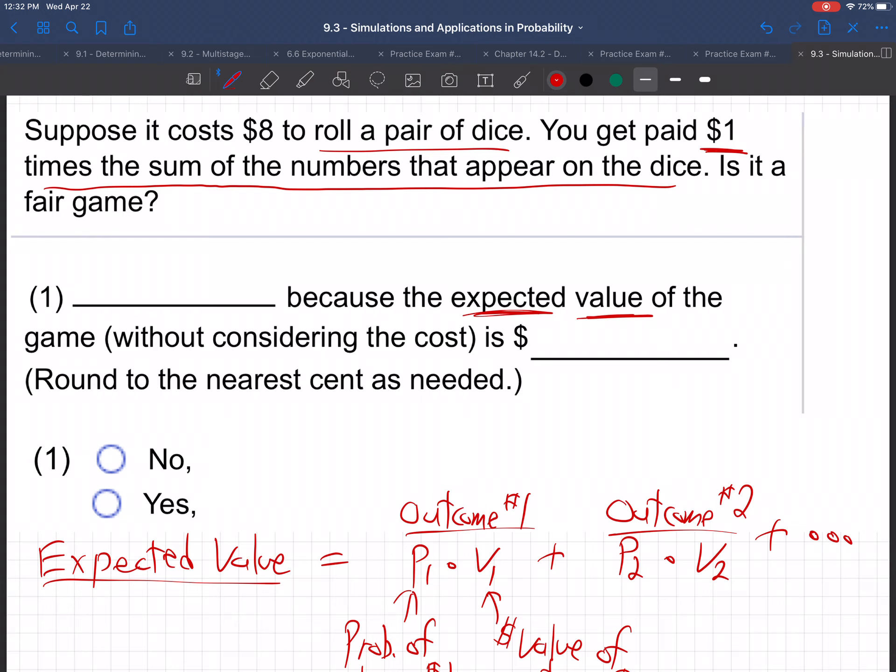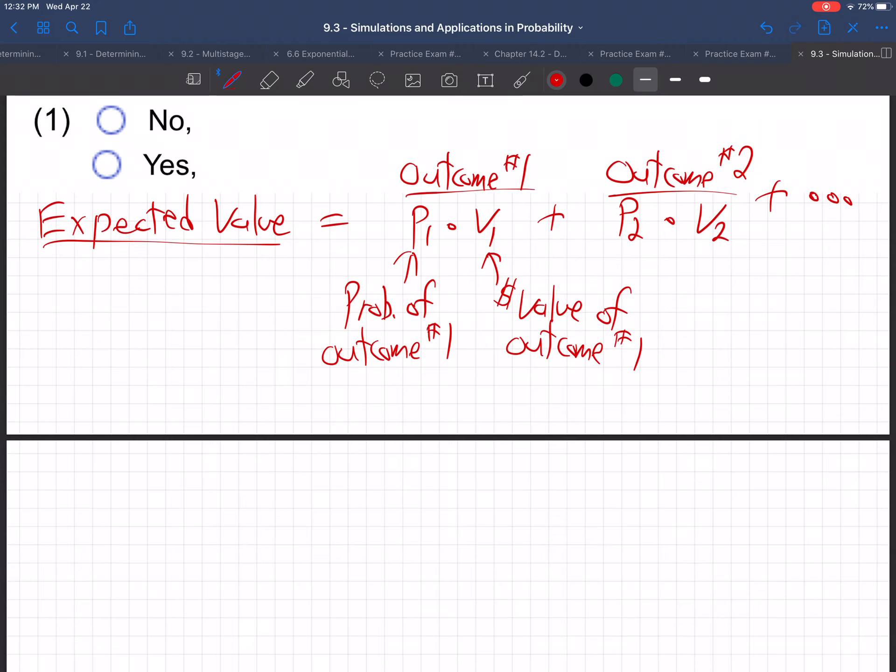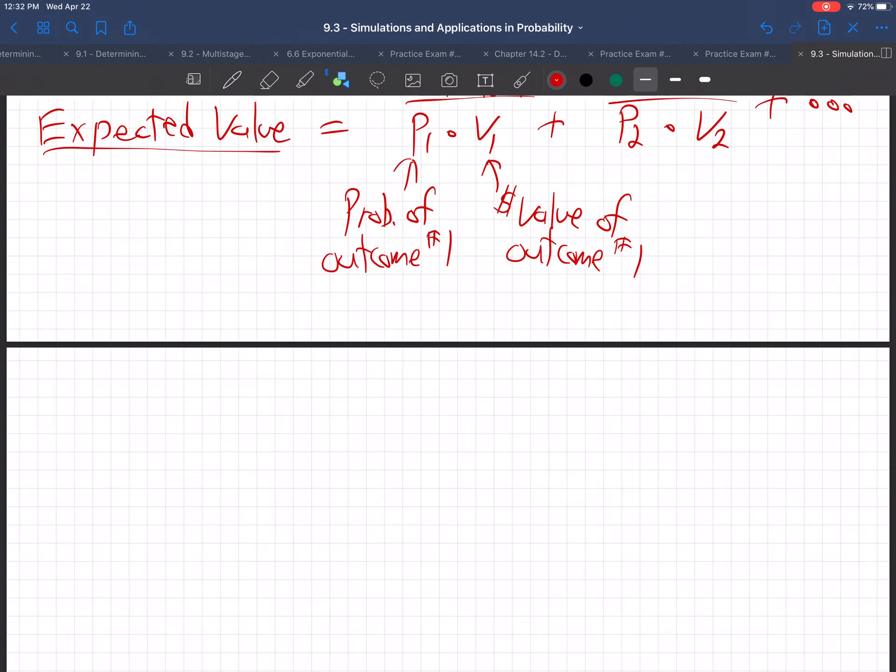This is not an easy question. We first have to realize that we're rolling a pair of dice, two dice, and we're talking about the sum. So we have to make that chart that we've made before, where we lay out rolling two dice. So let's do that over here.